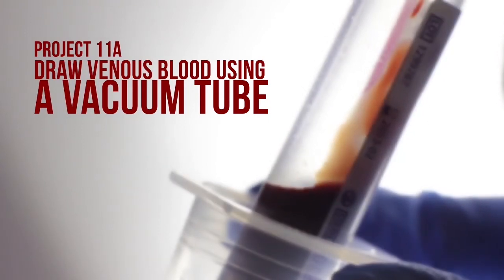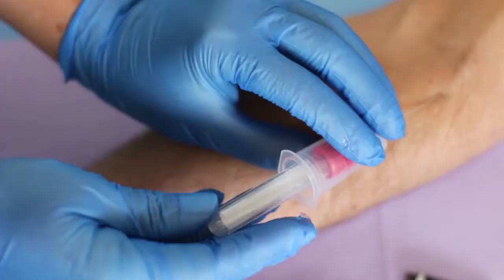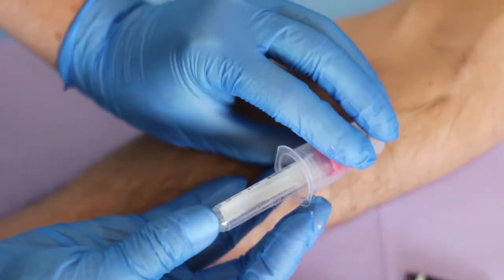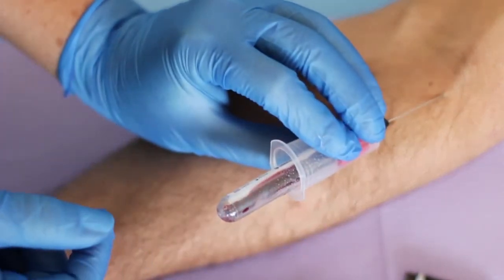Project 11A: Draw venous blood using a vacuum tube. Use the venipuncture trainer to simulate drawing blood and follow the steps as if in a real clinical situation.